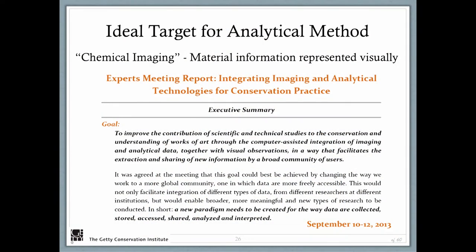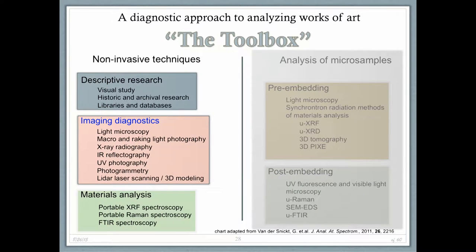You don't need a sample. The ideal target for an analytical method is chemical imaging — material information represented visually — as highlighted at the experts meeting in September 2013. Going back to the toolbox: since we've ruled out micro-samples, we're left with imaging diagnostics and materials analysis. I've listed three techniques for materials analysis: portable XRF spectroscopy, portable Raman, and portable FTIR. The last two aren't very suitable — Raman has problems with fluorescence, and FTIR only gives organic information and is a surface technique that won't work well on varnished paintings. So we settle on portable XRF spectroscopy, which is elemental in nature and complementary to imaging diagnostics.